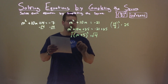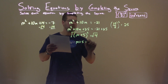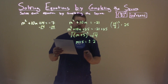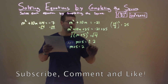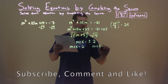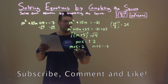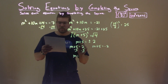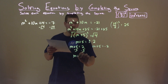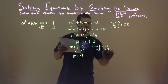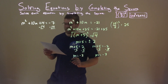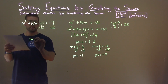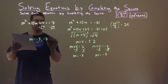We square root both sides: m plus 5 equals plus or minus the square root of 4, which is 2. Writing this as two equations: m plus 5 equals positive 2, and m plus 5 equals negative 2. Subtracting 5 from both sides: m equals 2 minus 5, which is negative 3. Subtracting 5 again: m equals negative 2 minus 5, which is negative 7. Our two solutions are m equals negative 3 and negative 7.